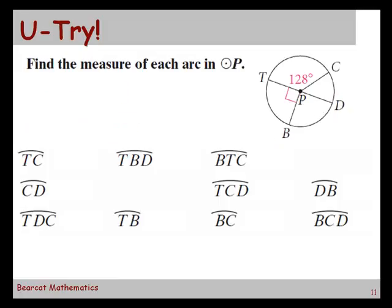Find the measure of each arc in circle P. So we're given circle P with the radii that are there, a 128 degree central angle, and a 90 degree central angle. Sometimes when you're doing a problem like this, it helps to copy the picture and write answers on the picture as you go along, because it'll help you get all the other ones faster.